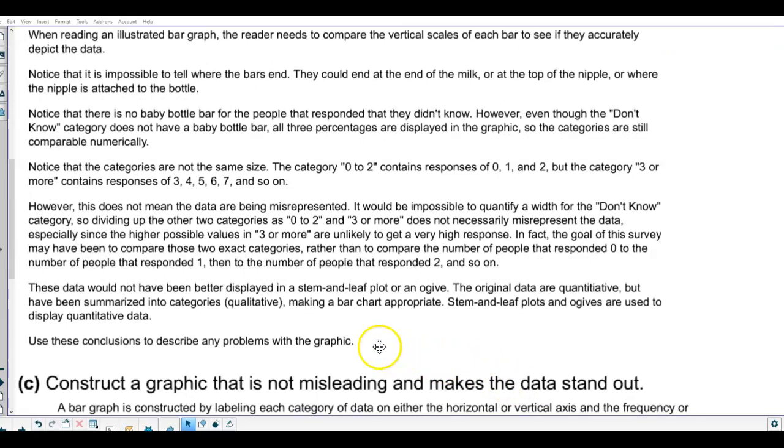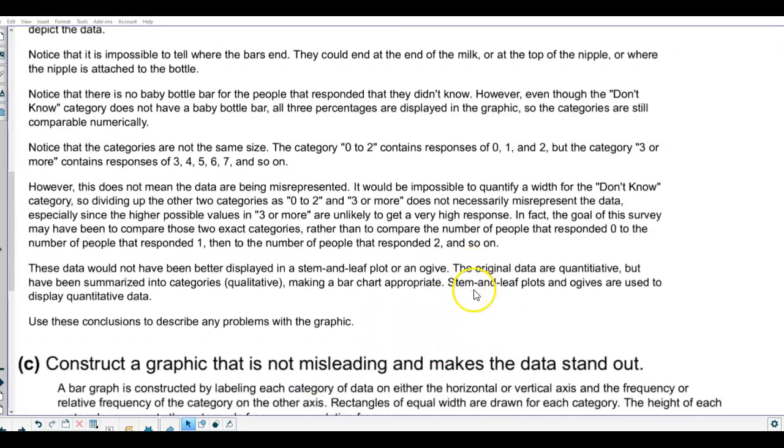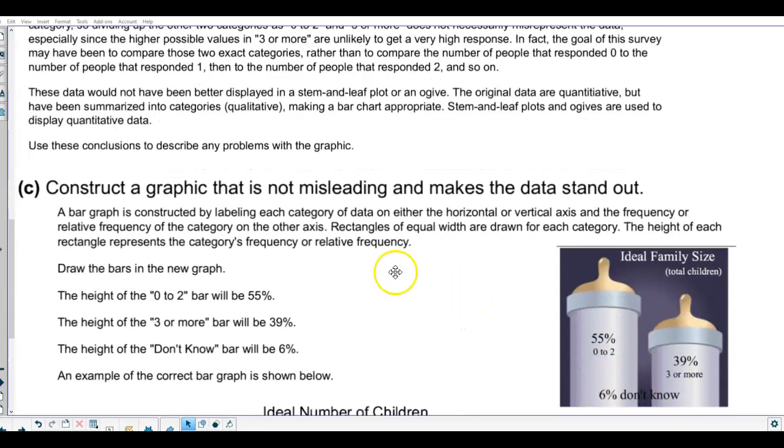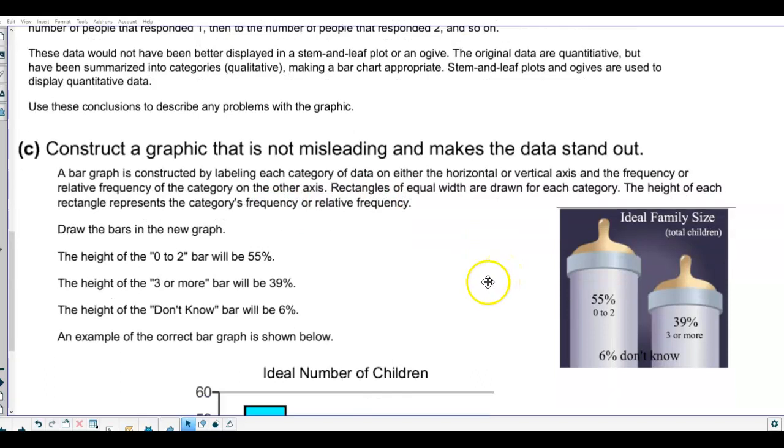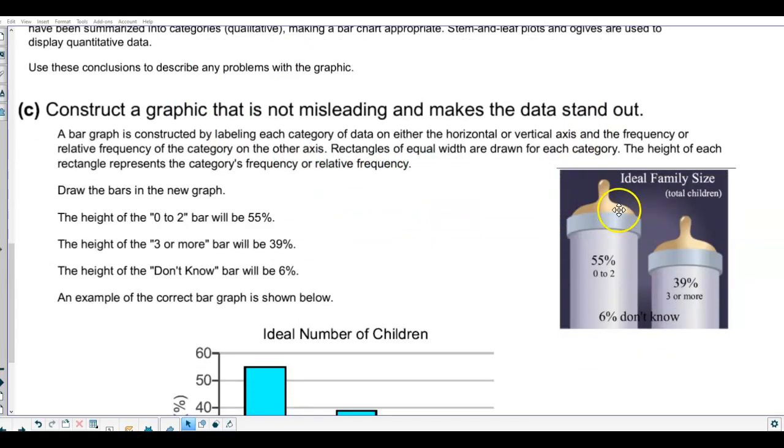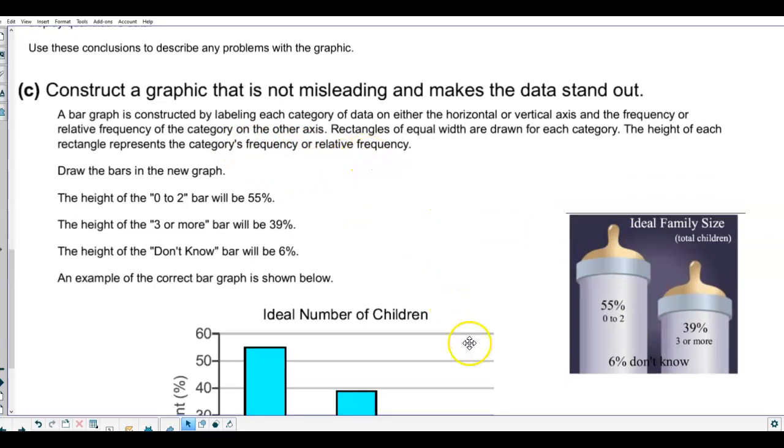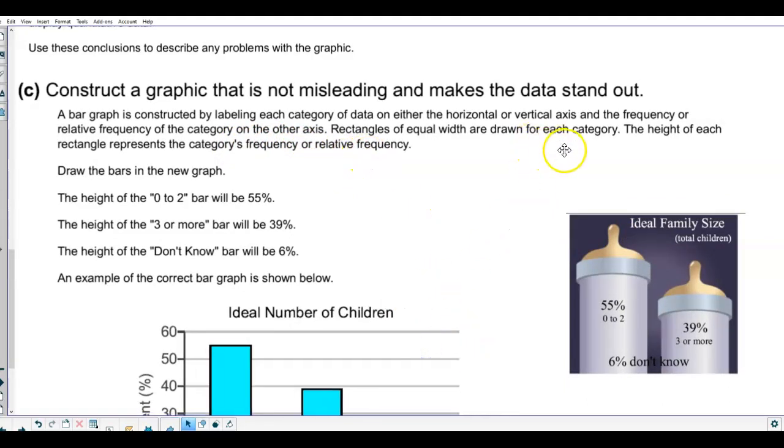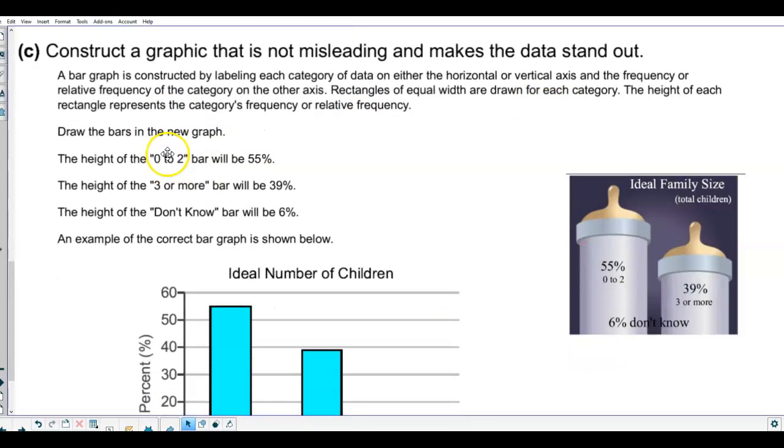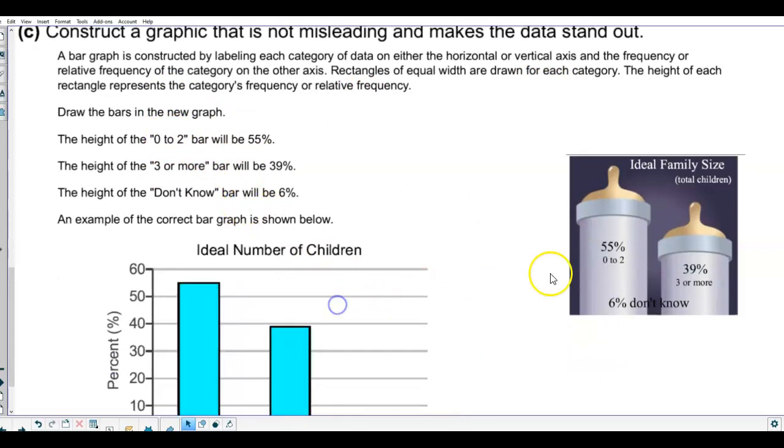So we're going to use these conclusions to describe any of the problems with the graphic. Now part C, we want to construct a graphic that is not misleading that makes the data stand out. A bar graph is constructed by labeling each category of data on either the horizontal or vertical axis, and the frequency or relative frequency of the category on the other axis. Rectangles of equal length are drawn for each category, and the height of each rectangle represents the category's frequency or relative frequency.